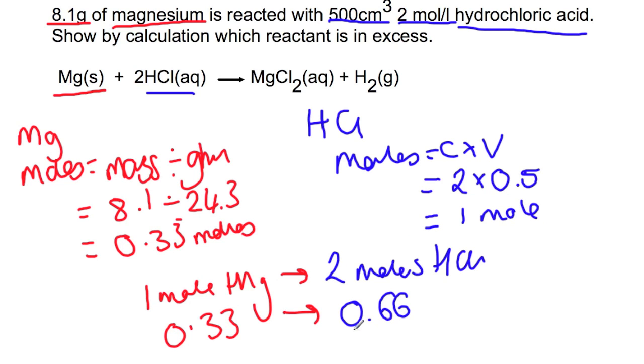Now you need to compare this value to the value that you've calculated as the value that you have present. And you need to have a look. If the number here is smaller than this number, then it means that this reactant is in excess. If the number here is bigger than this number, then this is your limiting reagent.